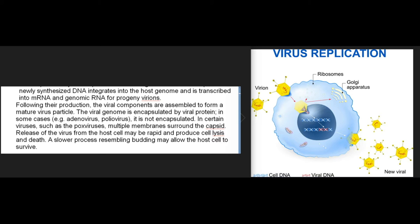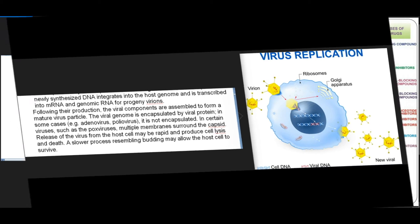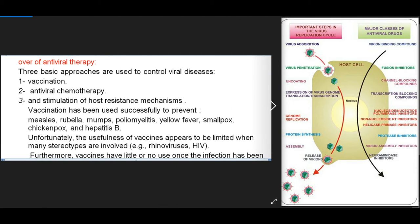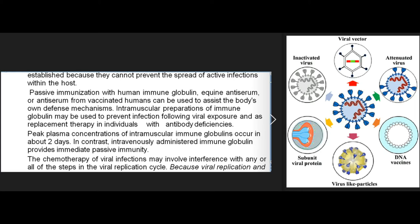In some viruses such as adenovirus and poliovirus, the viral genome is not encapsulated; in certain viruses such as the poxviruses, multiple membranes surround the capsid. Release of the virus from the host cell may be rapid and produce cell lysis and death, or a slower process resembling budding may allow the host cell to survive. Three basic approaches are used to control viral diseases: (1) vaccination, (2) antiviral chemotherapy, and (3) stimulation of host resistance mechanisms. Vaccination has been used successfully to prevent measles, rubella, mumps, poliomyelitis, yellow fever, smallpox, chicken pox, and hepatitis B. Unfortunately, the usefulness of vaccines appears to be limited when many serotypes are involved, as with rhinoviruses and HIV. Furthermore, vaccines have little or no use once the infection has been established.